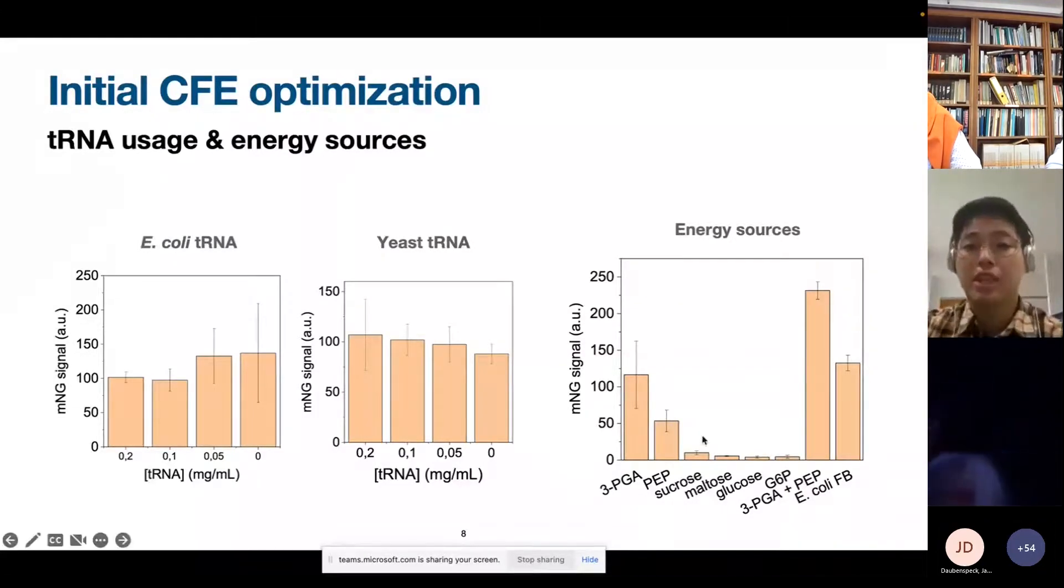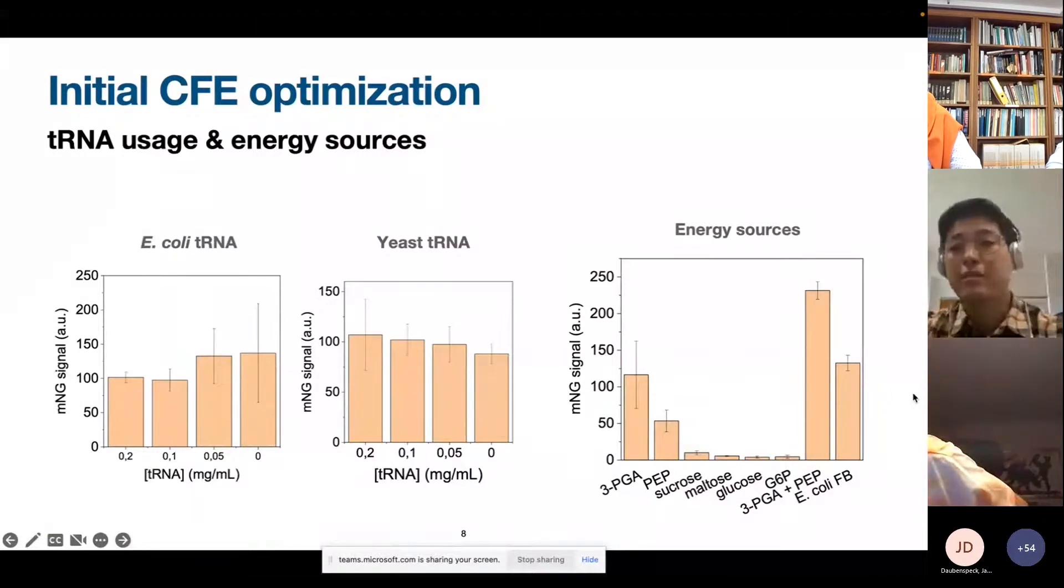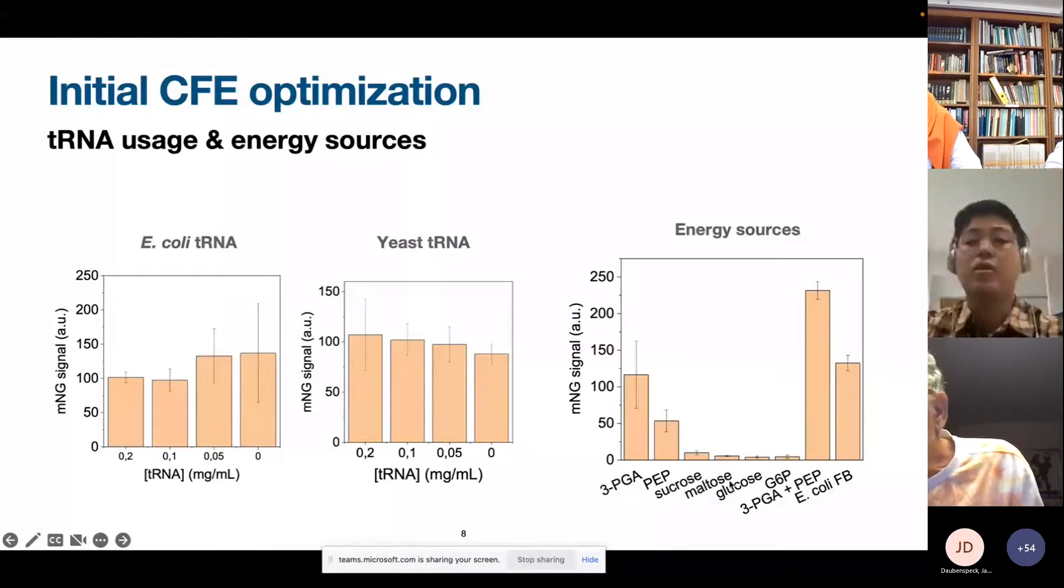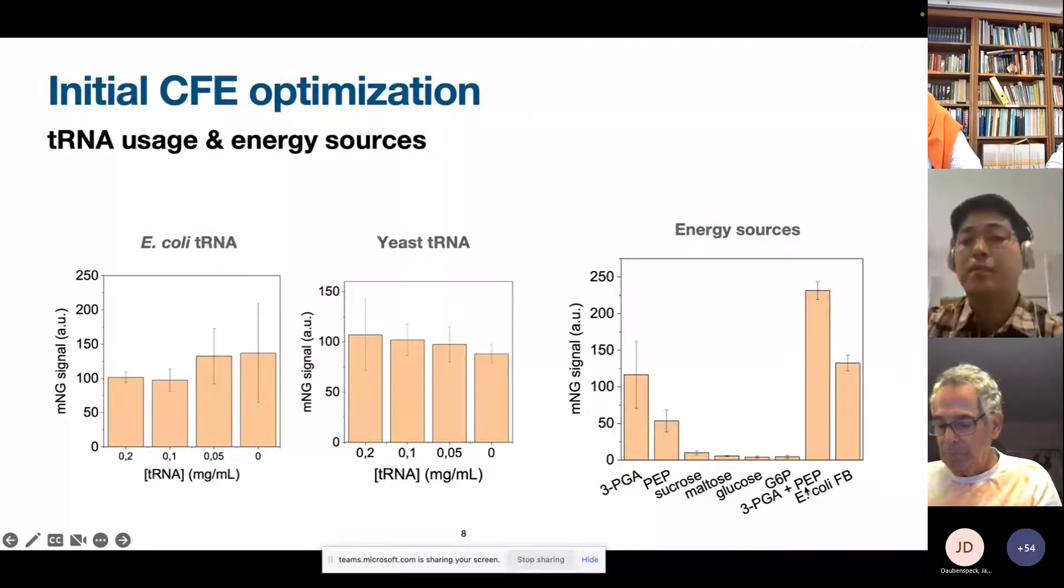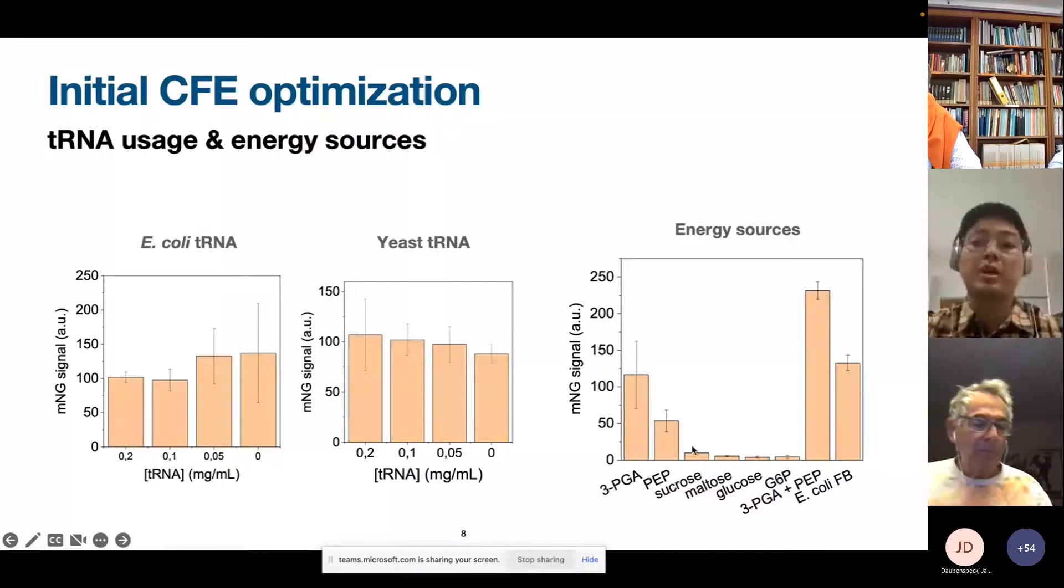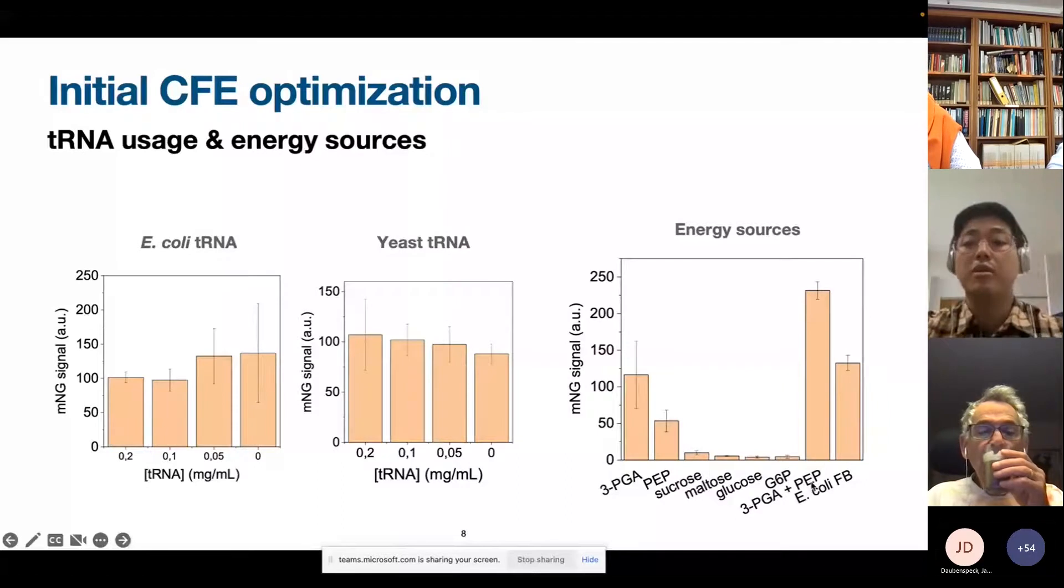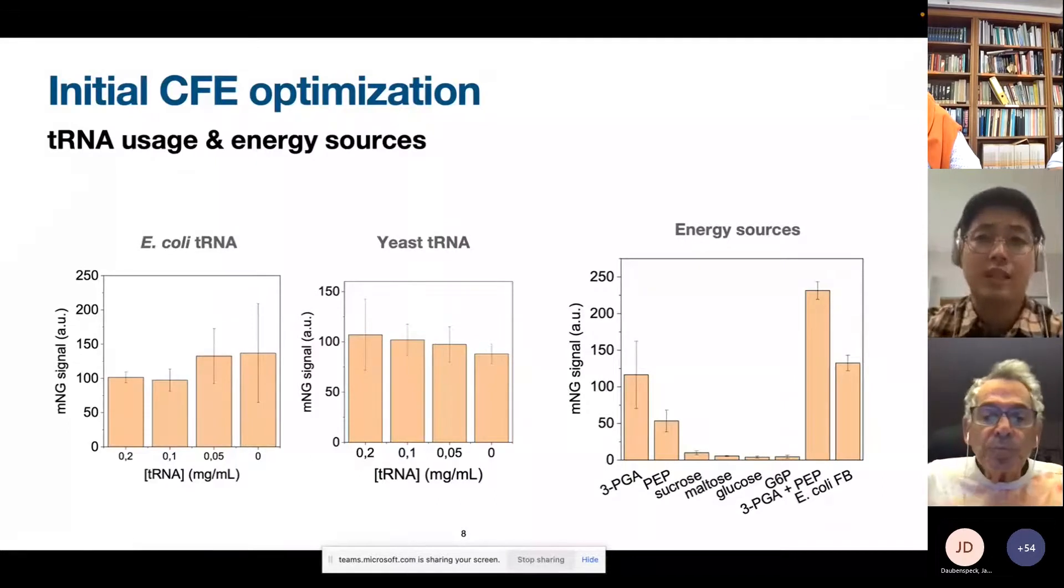And also, we tried to check what are the best energy sources for our reaction. So for example, 3PGA or PEP or some other sugars like maltose, glucose, glucose 6-phosphate. So what we can see here is that probably 3PGA and PEP, or even a combination of both, they are the most suitable energy sources for the SYN3A CFE system.